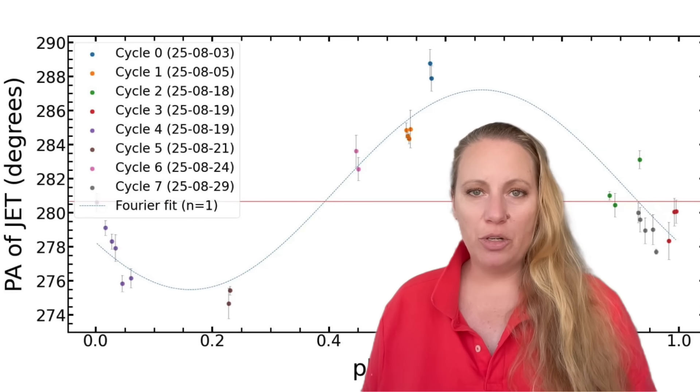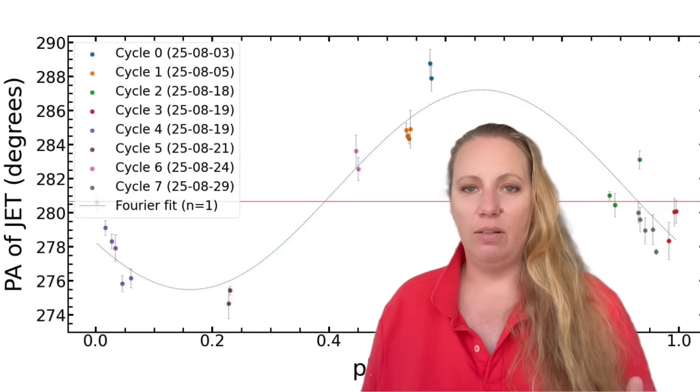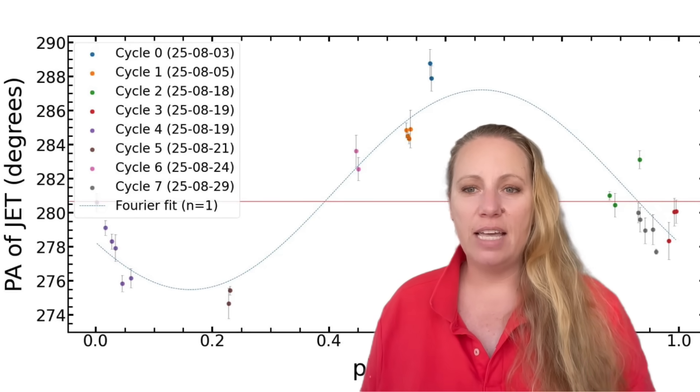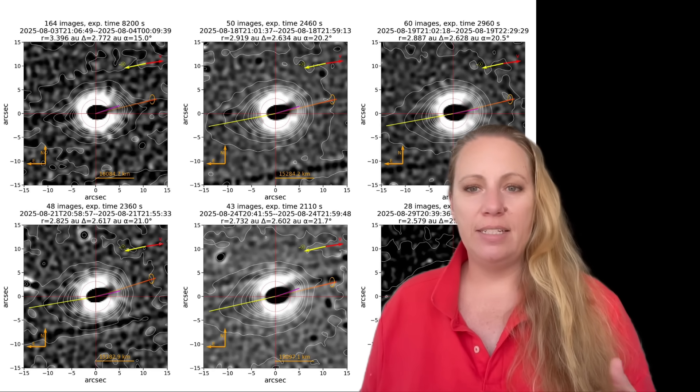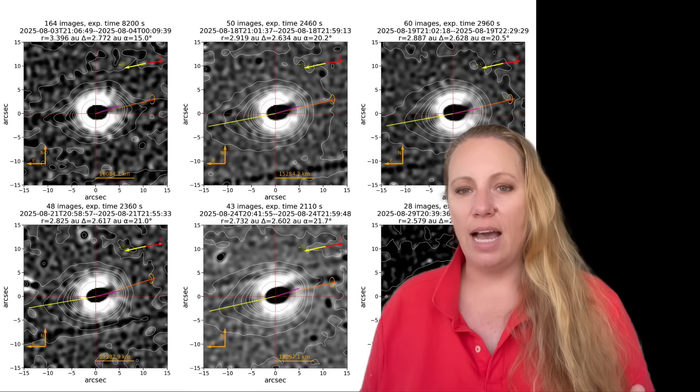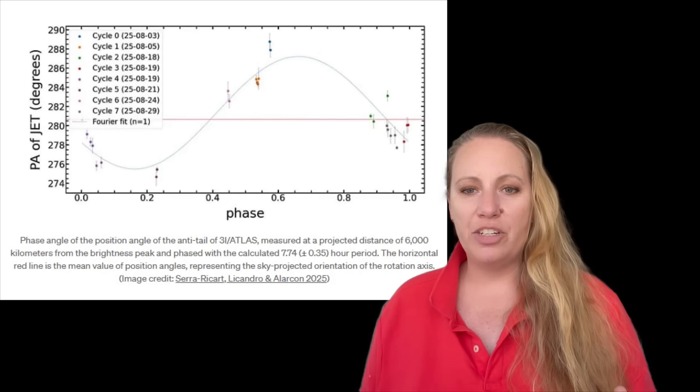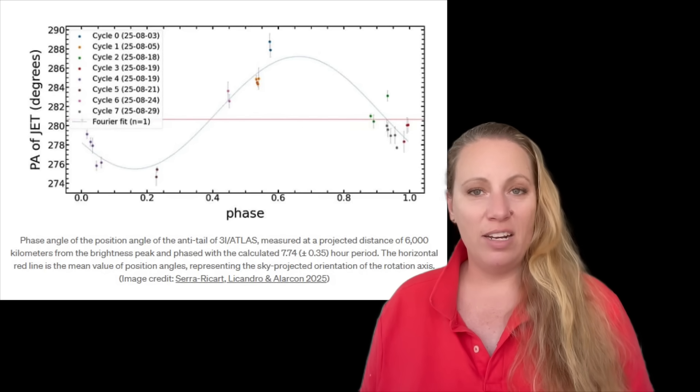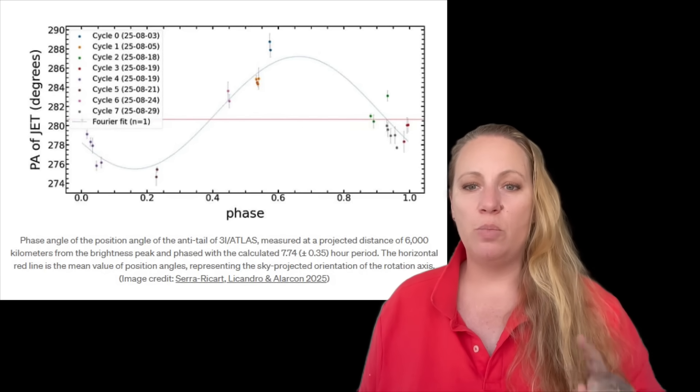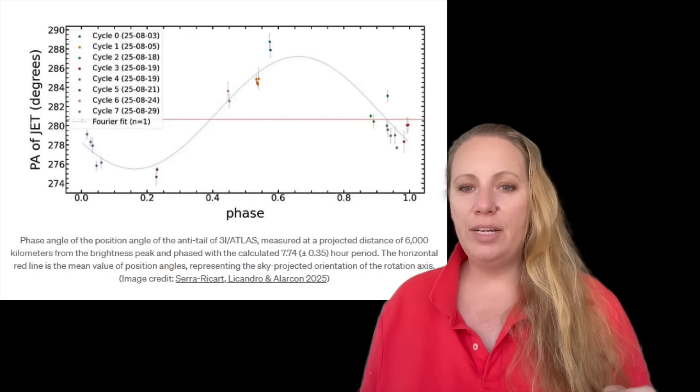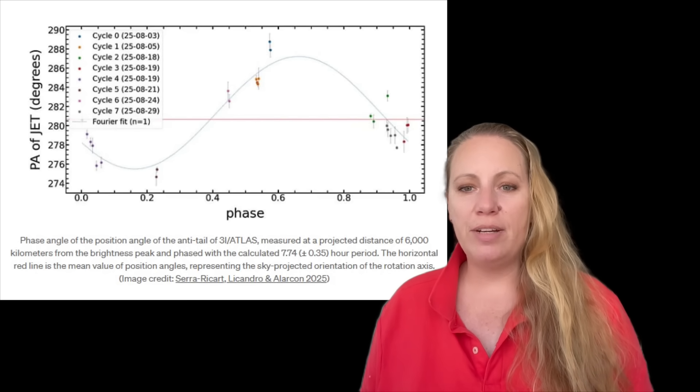Astronomers measure the position angle, the position angle of that anti-tail. Position angle just means which direction the anti-tail is pointing on the sky and it is measured in degrees, it's like a compass. So zero degrees is one direction, 90 degrees is another, 180 degrees is another, 360 degrees brings you back around. So here the values are around 275 to 290 degrees.